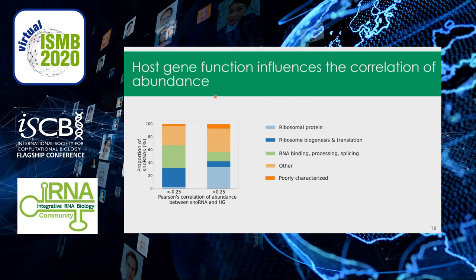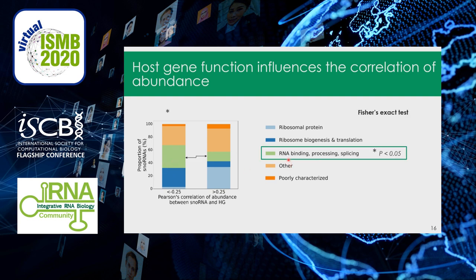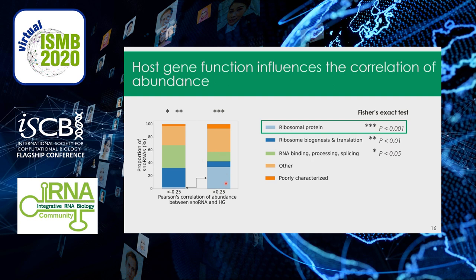For protein-coding host genes, I looked at their biological function. I pooled anti-correlated and positively correlated snoRNAs separately and examined their host gene biological functions. There is a clear enrichment among host genes of anti-correlated snoRNAs in processes such as RNA metabolism, ribosome biogenesis, and translation, whereas host genes of positively correlated snoRNAs are mostly enriched in ribosomal protein coding genes.